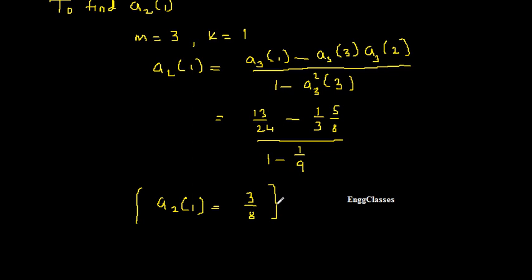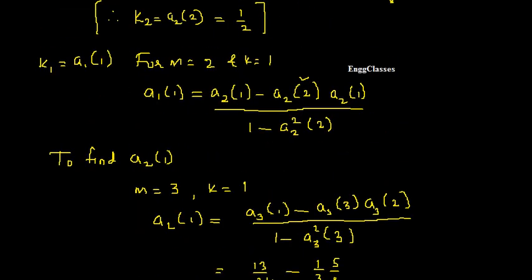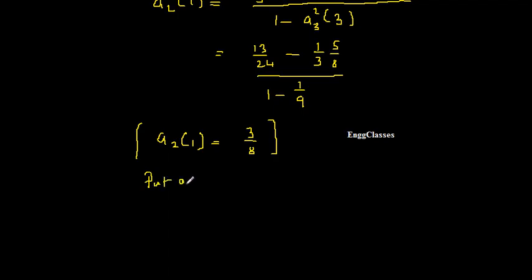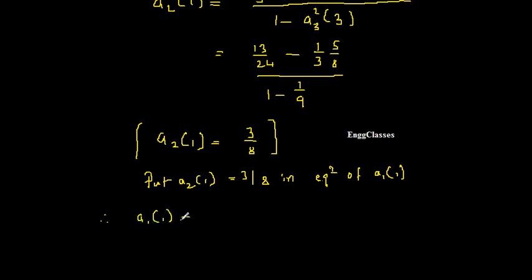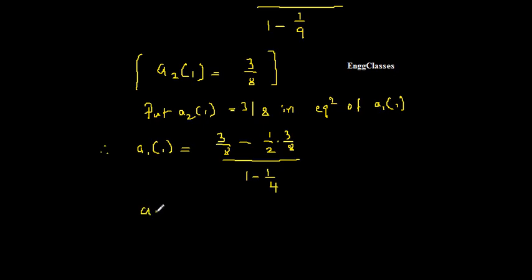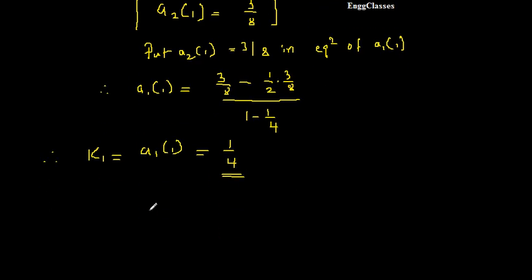Now substituting A2(1) = 3/8 into the expression for A1(1): A1(1) = [3/8 − (1/2)(3/8)] / [1 − (1/2)²] = [3/8 − 3/16] / [1 − 1/4]. Solving this, A1(1) = K1 = 1/4.